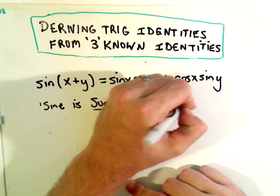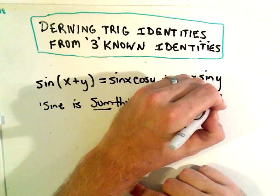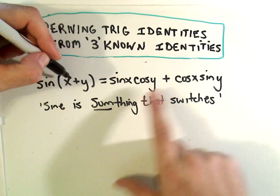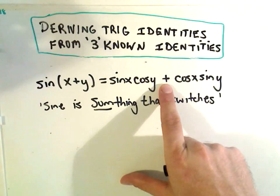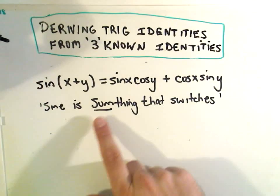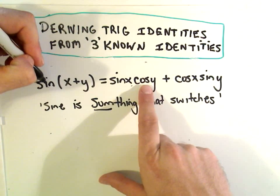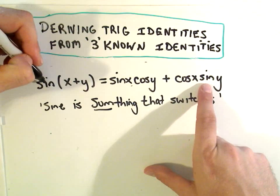So at least what that means to me—people always laugh when I say this in class—so sine of x plus y, so it's something, which means if it starts plus, it stays plus. It says it's something that switches, so it switches from sine to cosine, and then it flips back the other way. So sine got the x, cosine got the y, now cosine gets the x, sine gets the y.